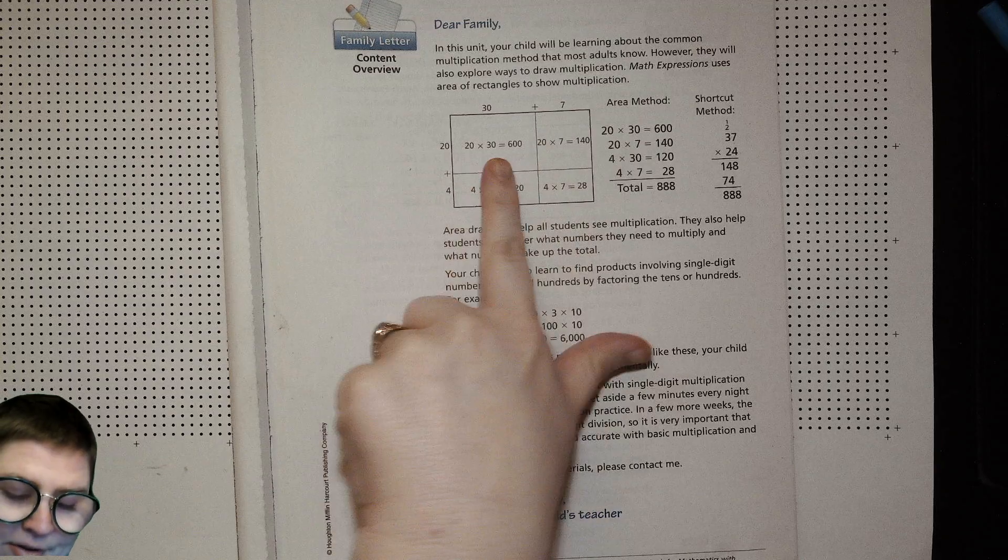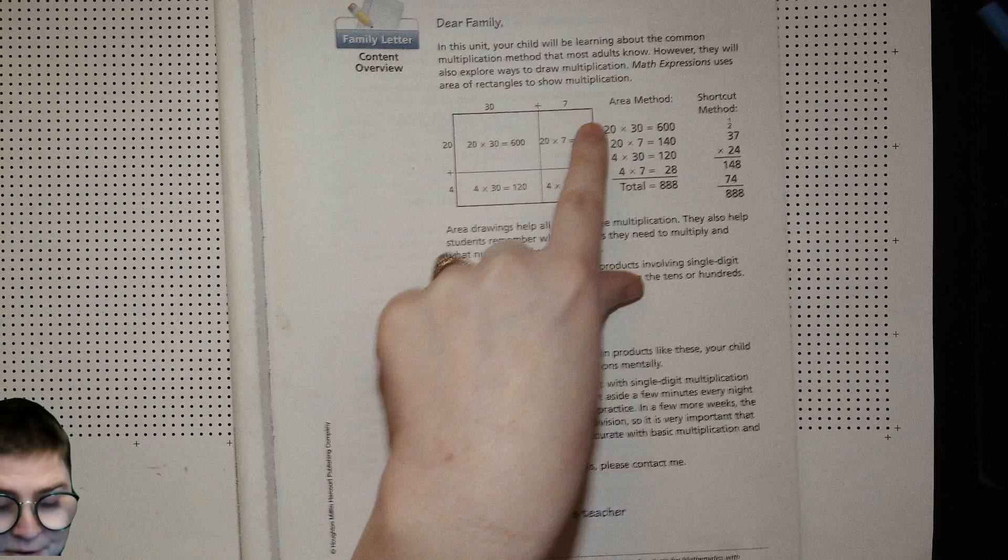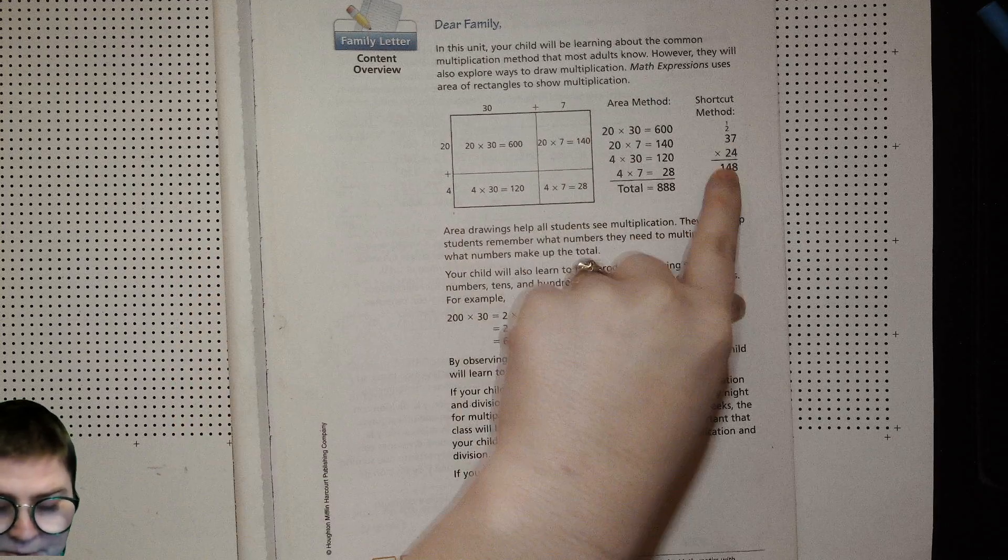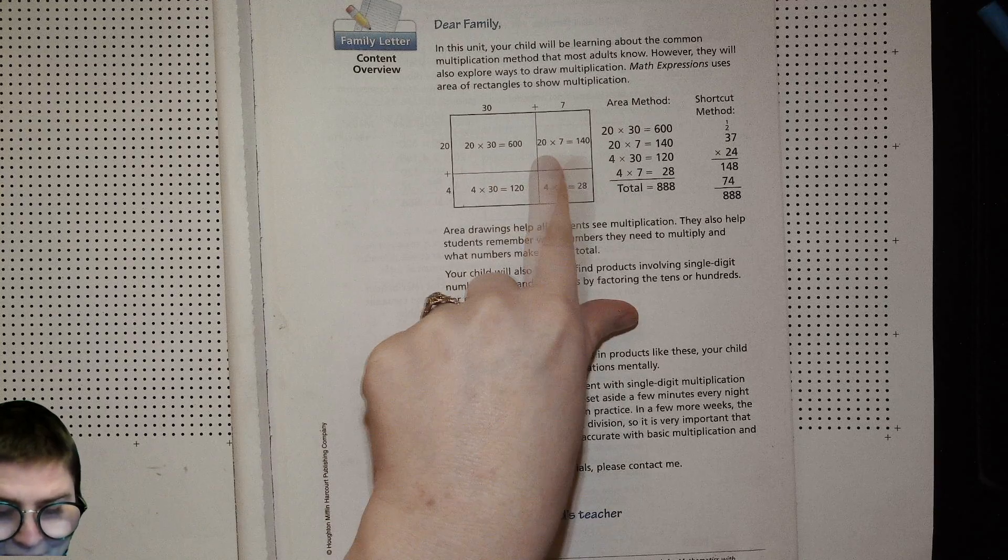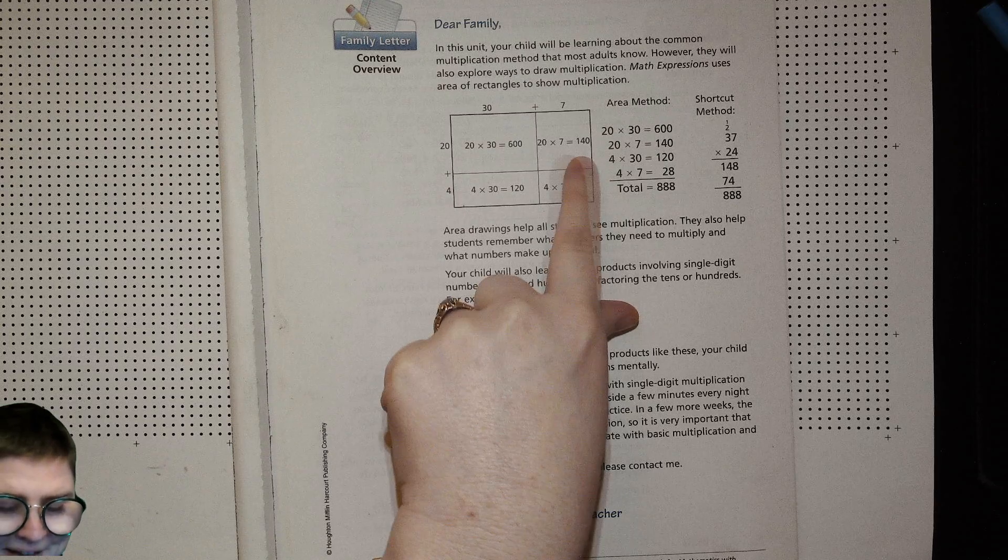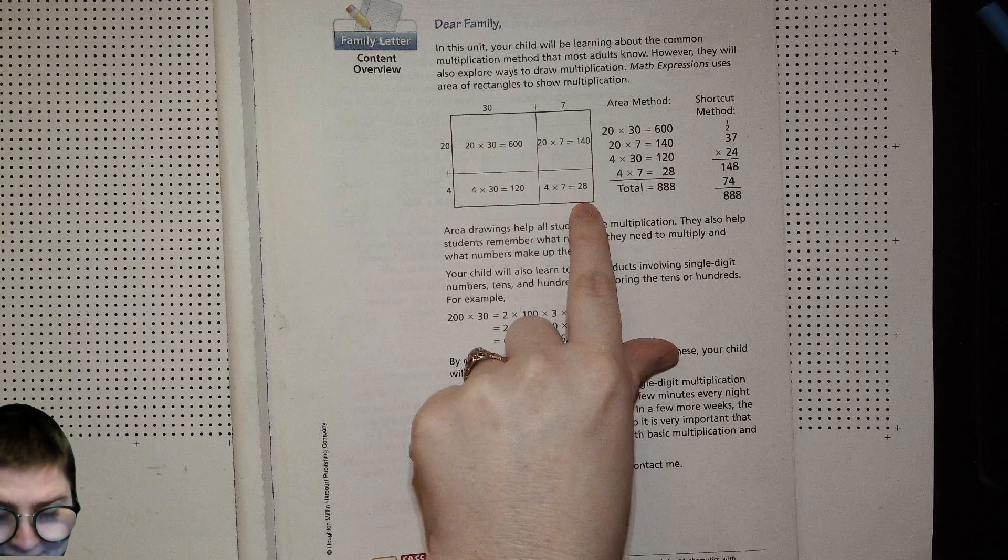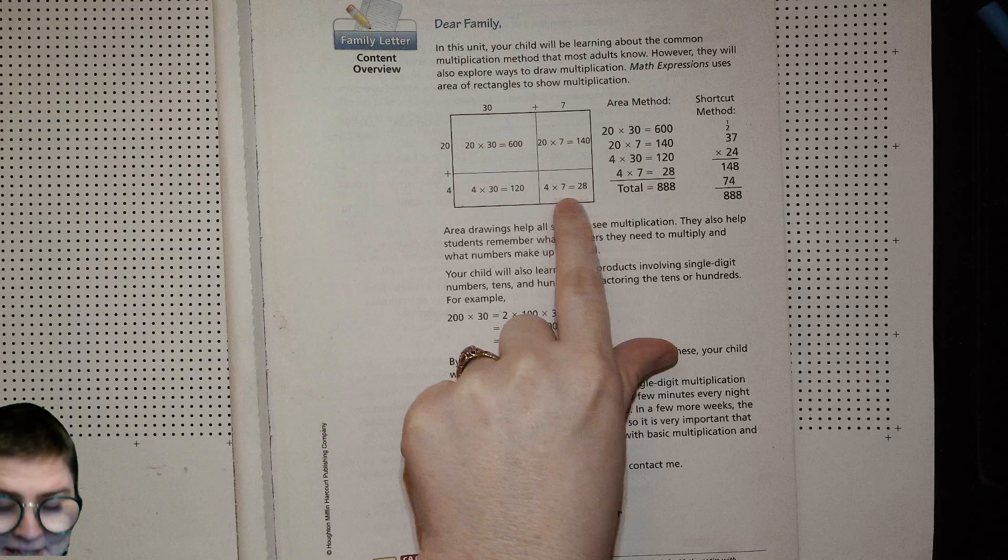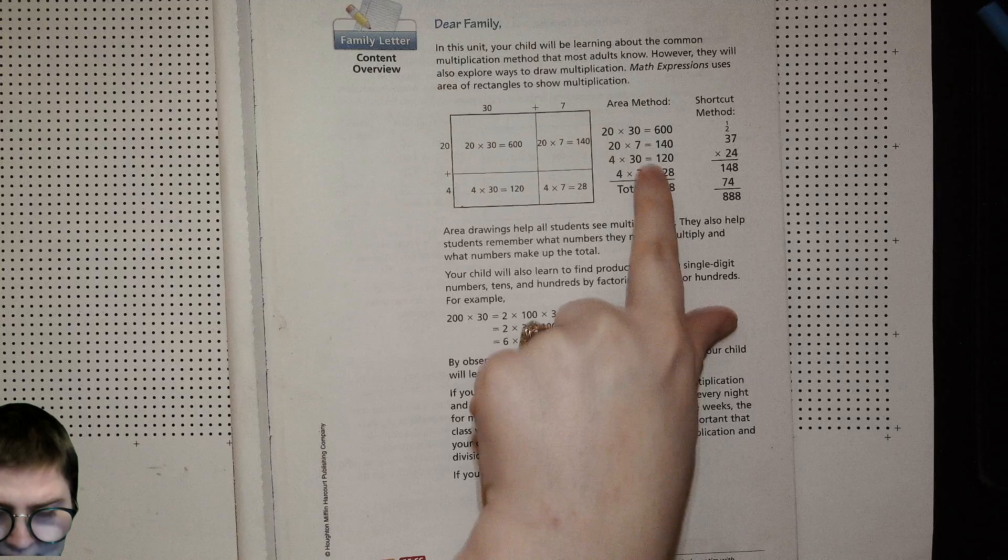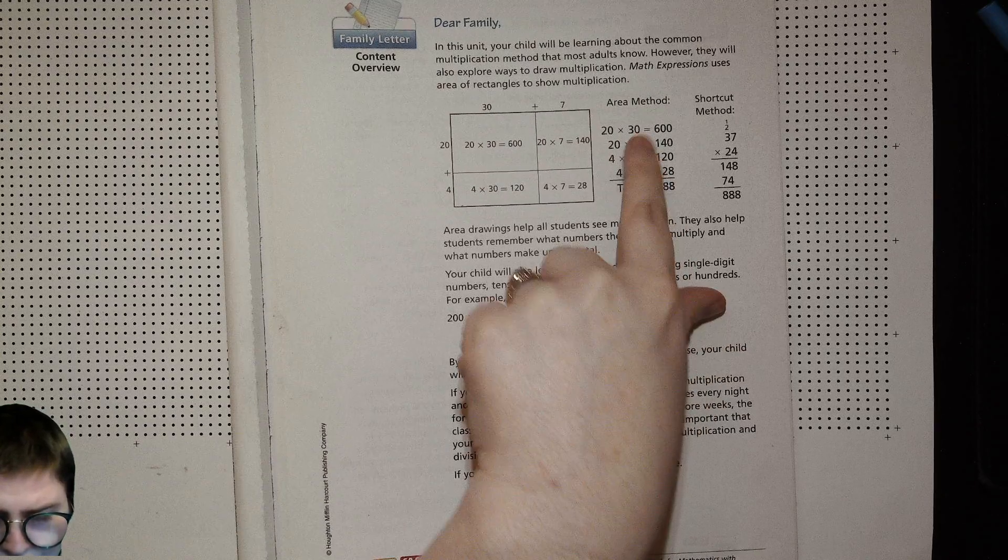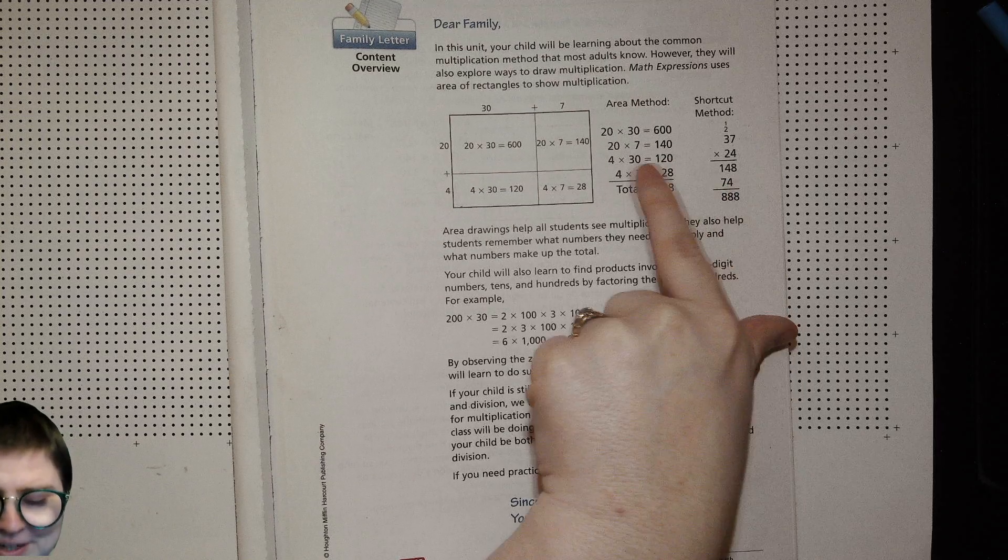So here's the area model and the area method and the shortcut method. And it's all for this number 37 times 24. So you get your 600 by the 30 times 20, the 140 for the 20 times 7, the 120 from the 4 times 30, and the 28 from the 7 times 4. So those show up still here. But this is the 120 and the 28 are right here.